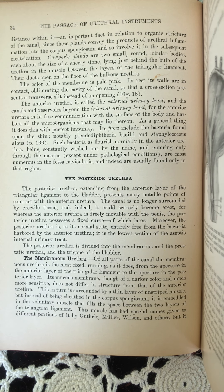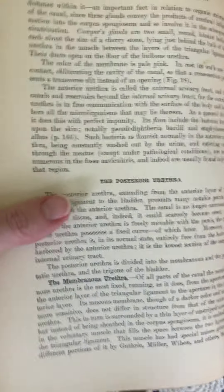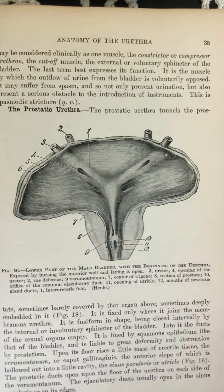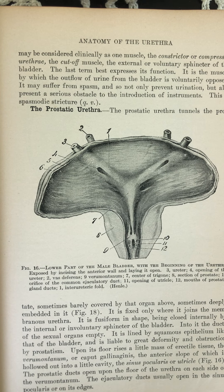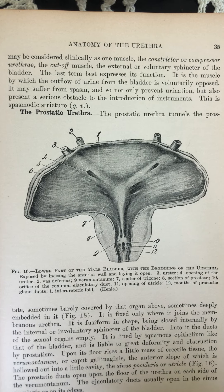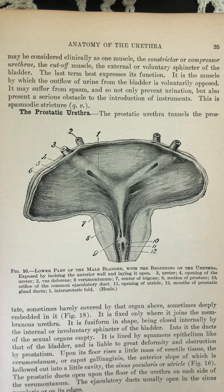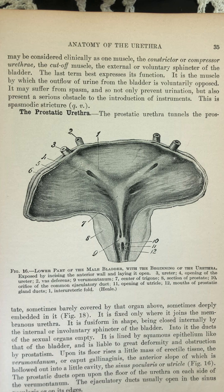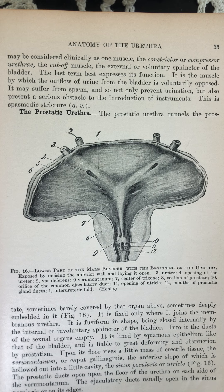This muscle has had special names given to different portions of it by Guthrie, Mueller, Wilson, and others, but it may be considered clinically as one muscle: the constrictor or compressor urethrae, the cutoff muscle, the external or voluntary sphincter of the bladder. The last term best expresses its function. It is the muscle by which the outflow of urine from the bladder is voluntarily opposed. It may suffer from spasm and so not only prevent urination, but also present a serious obstacle to the introduction of instruments. This is spasmodic stricture.